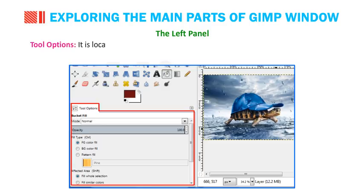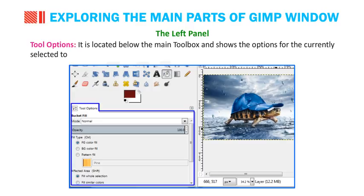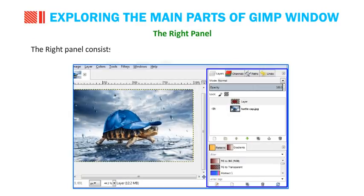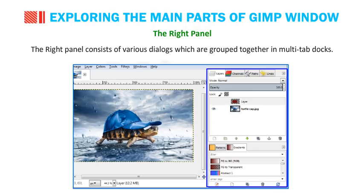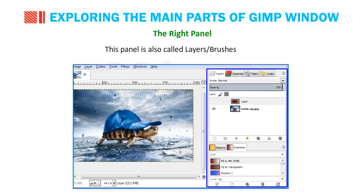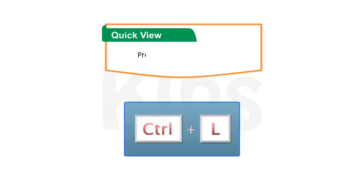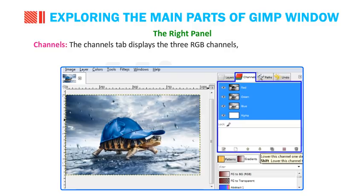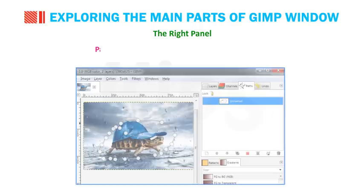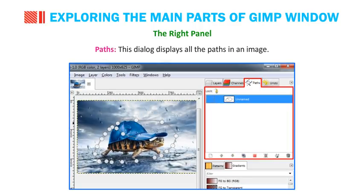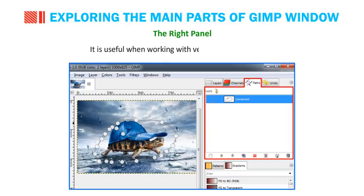Tool Options is located below the main toolbox and shows the options for the currently selected tool. The Right Panel consists of various dialogs grouped together in multi-tab docks, also called the Layers or Brushes panel. The Layers dialog displays the layer structure of the currently active image and provides options to manipulate those layers. Press Ctrl+L to enable the Layers tab. The Channels tab displays the three RGB channels, showing the current red, green or blue color values of each pixel in your image. The Parts dialog displays all the paths in an image, allows you to manage them and convert them into selections — useful when working with vector drawings.